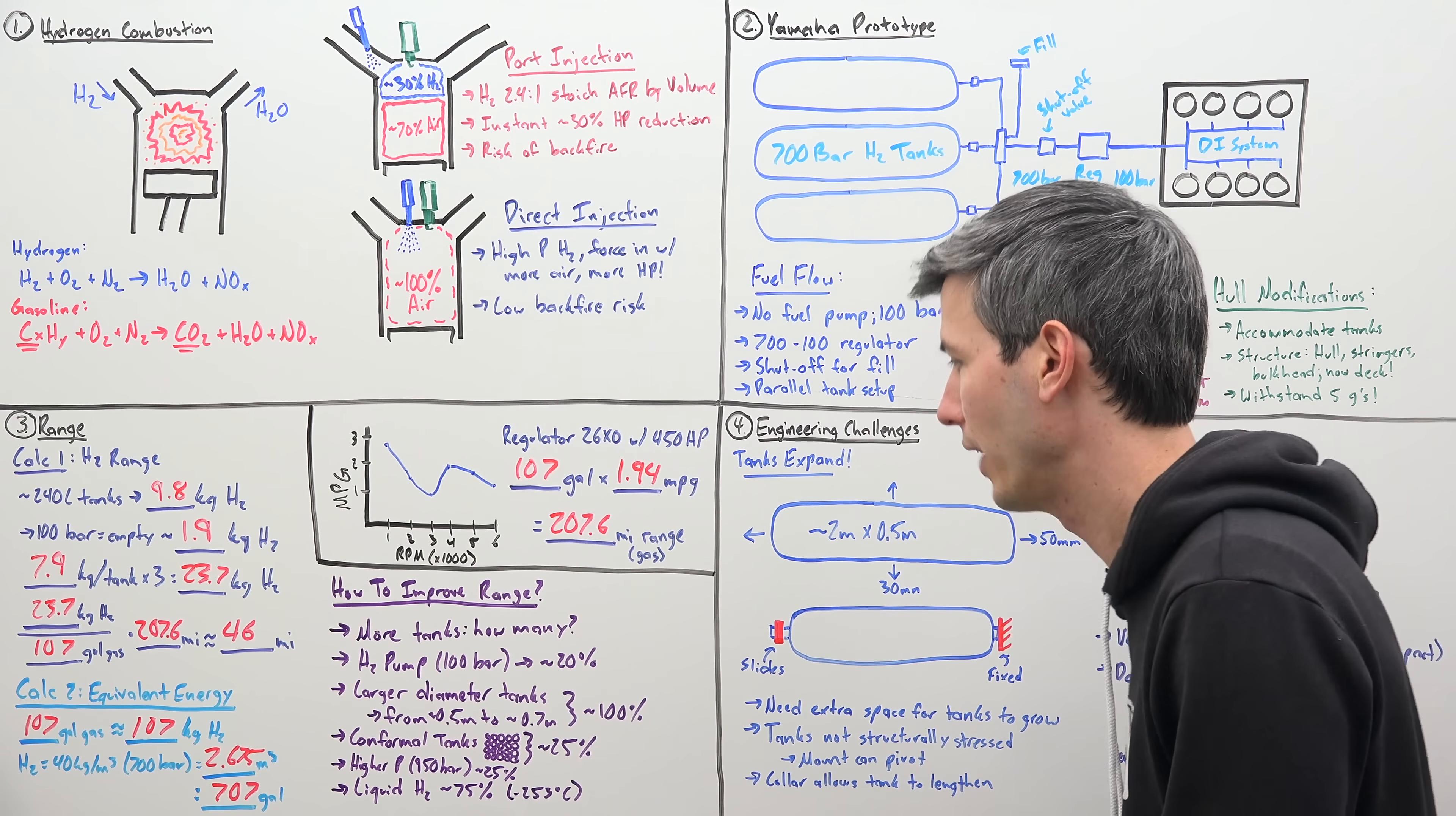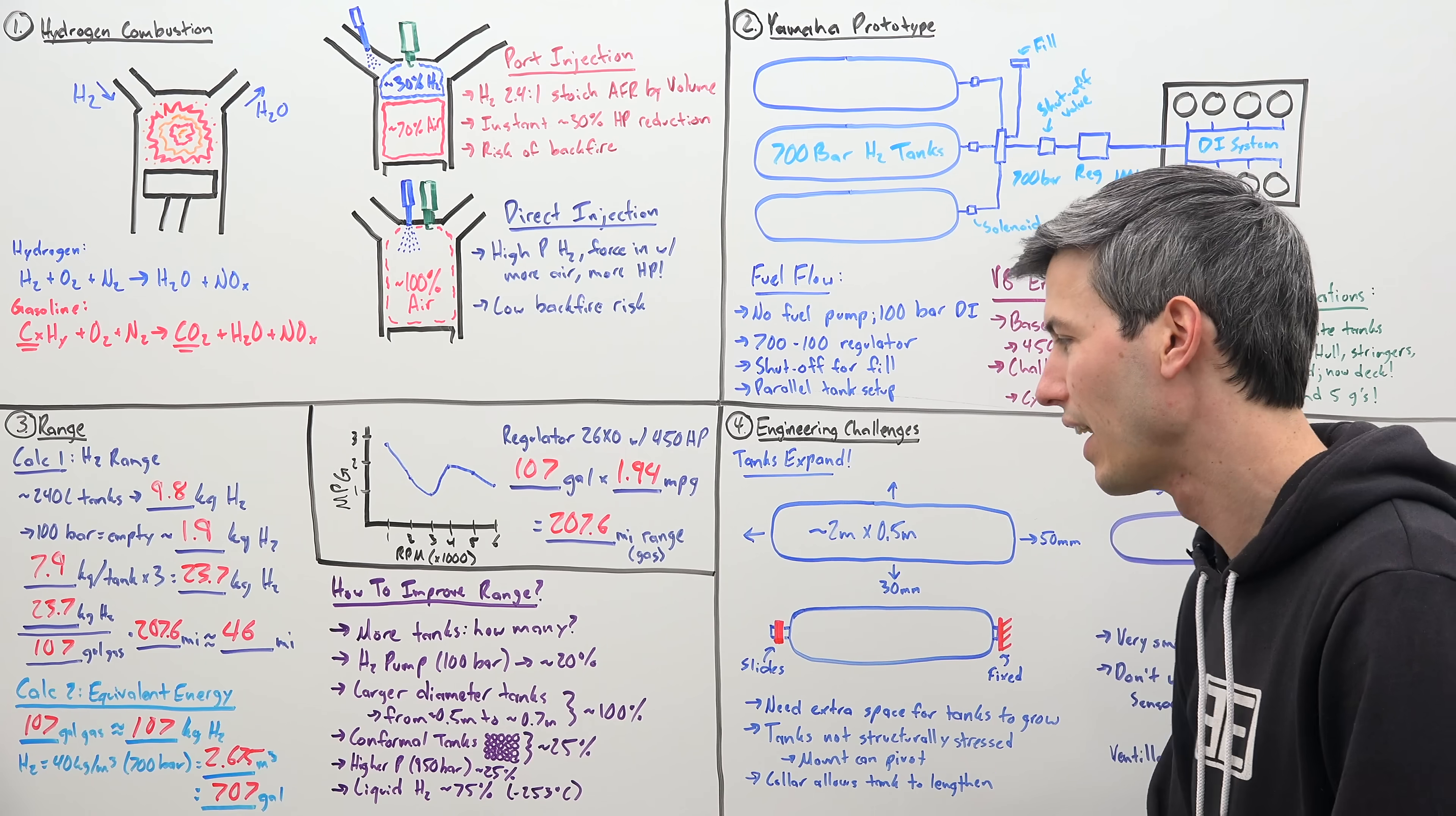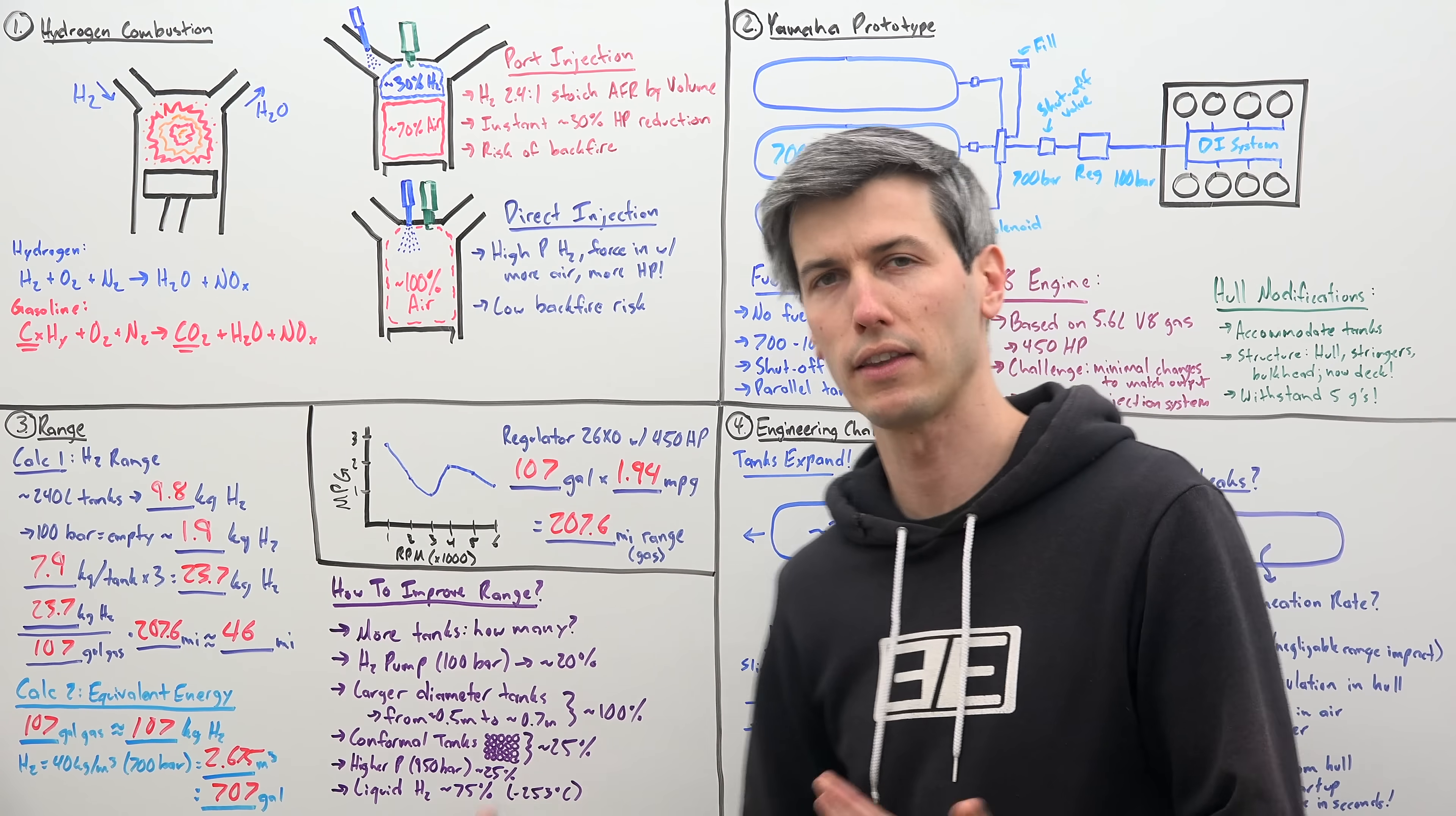You could use higher pressure hydrogen. There are stationary storage tanks that are holding pressurized gaseous hydrogen at 950 bar, that gives you an increase of about 25%, and then there's also liquid hydrogen, which over this gaseous hydrogen at 700 bar, liquid hydrogen is going to allow you to store 75% more hydrogen within the same space.